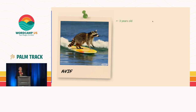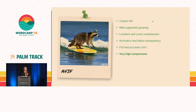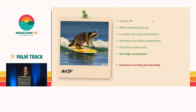Next comes AVIF, about three years old. It's well-supported — Safari just recently announced support. It has both lossless and lossy compression, animation and alpha transparency, full and accurate color, and very high compression. You might get a 30% boost from WebP, but a 50% boost from AVIF — it's cutting the size of JPEGs in half. Unfortunately, right now AVIF is very expensive to encode and decode: very slow to encode when you upload images and slow for the browser to decode. As a young format, this is something they're actively working on improving. The big issue for WordPress is server support — AVIF is not supported until PHP 8.1, and WordPress doesn't support PHP 8 very well yet.